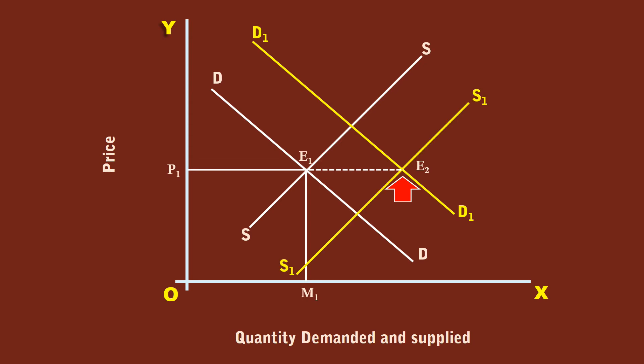The new supply curve is S1S1. The new equilibrium is formed at E2. Since the increase in demand is exactly matched by the increase in supply, the price remains at the same level P1. The quantity increases to M2. The final result is there is no change in price; quantity alone increases. The impact of equal increase in demand and supply falls fully on quantity.